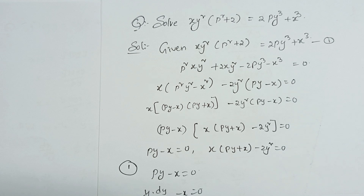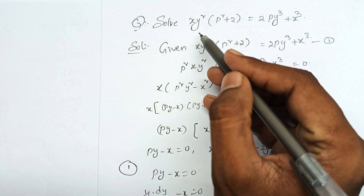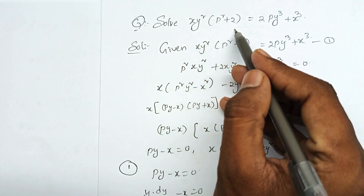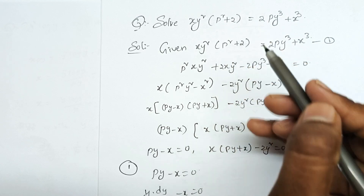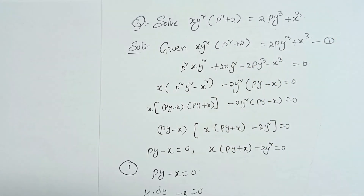The second unit will be done - marks. One of the important questions in the second unit. Let's take a look at: xy squared into p squared plus 2 is equal to 2py cubed plus x cubed.